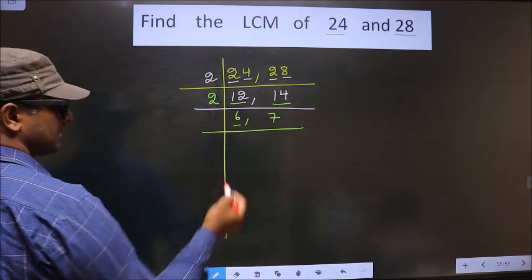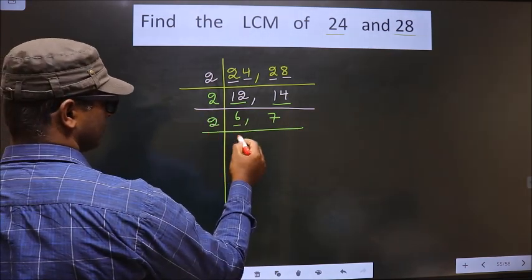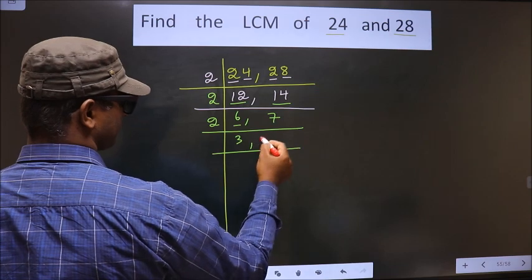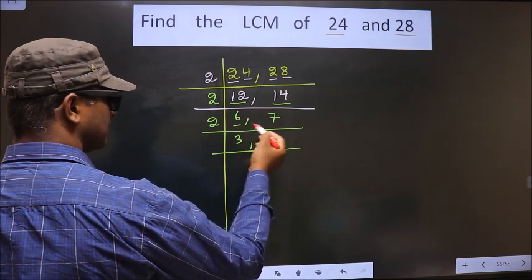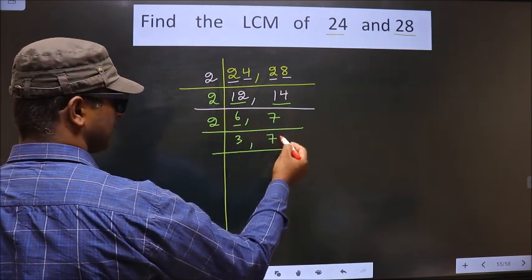Now, here we have 6. 6 is nothing but 2 times 3 is 6. Now, 7 is not divisible by 2, so you write down 7 as it is.